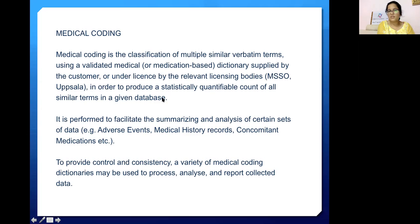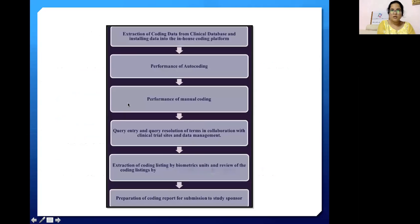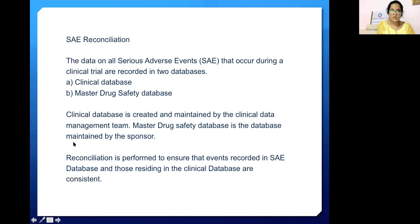Medical coding provides a statistically quantifiable count of all similar terms in a given database. It is performed to facilitate summarizing and analysis of certain sets of data like adverse events, medical history records, and concomitant medication. To provide control and consistency, a variety of medical coding dictionaries may be used. The process includes extraction of coded data from the clinical database, installing data in the in-house coding platform, auto-coding by computers, manual coding for terms that can't be auto-coded, query entry and resolution with clinical trial sites, and preparation of coding reports for submission to the study sponsor.